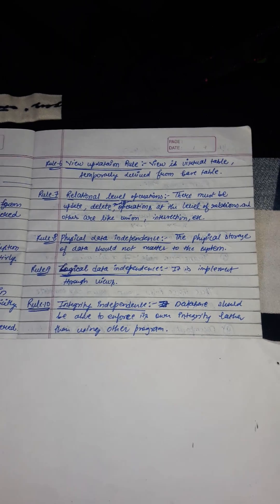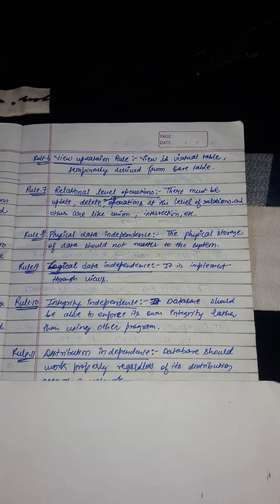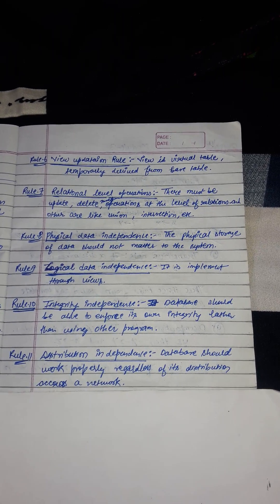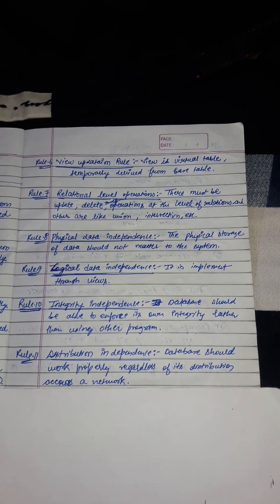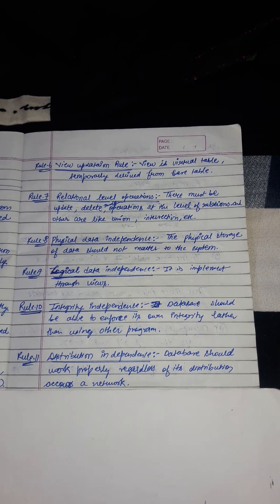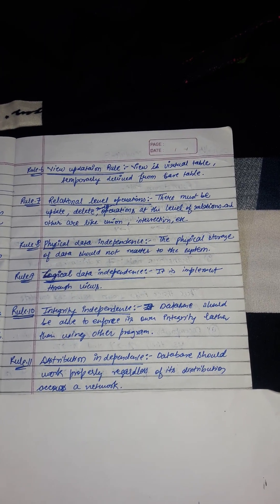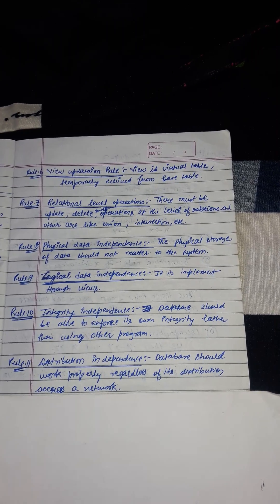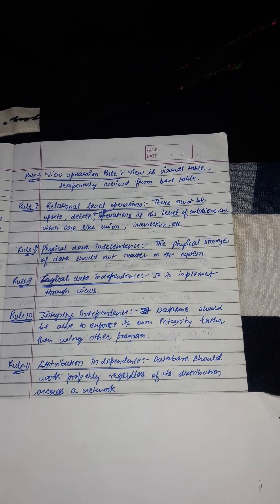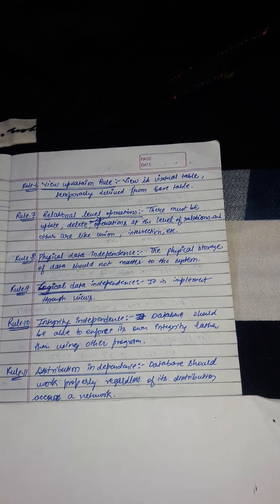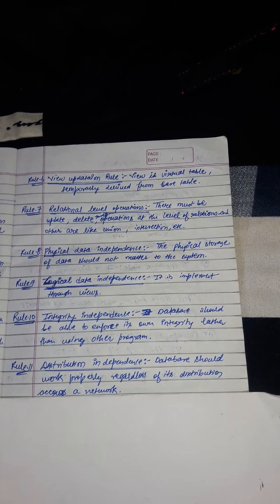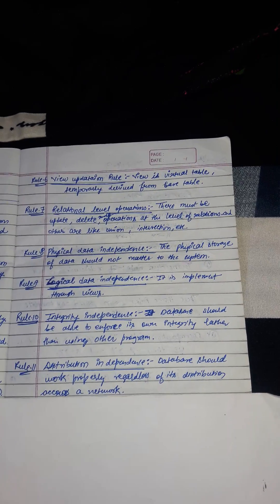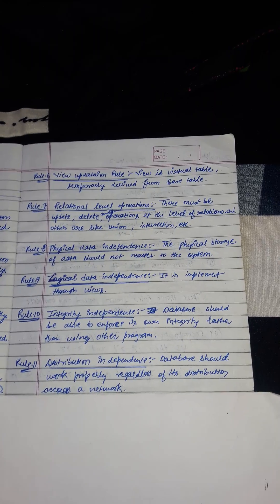Rule 11 is distribution independence. Distribution independence means the database must allow manipulation of distributed data located in another computer system. The database should work properly regardless of its distribution, access, and network.